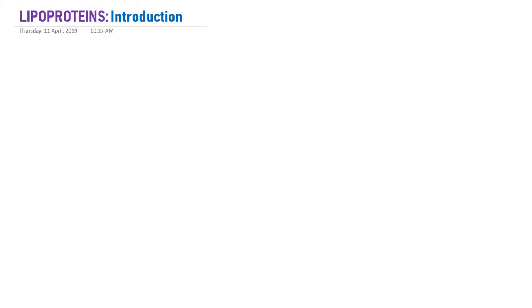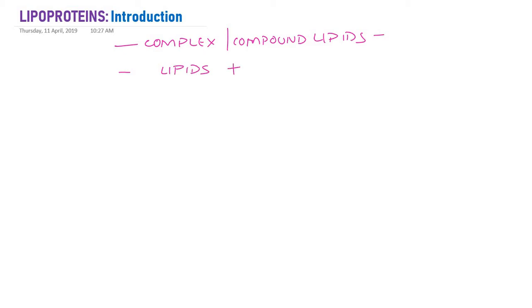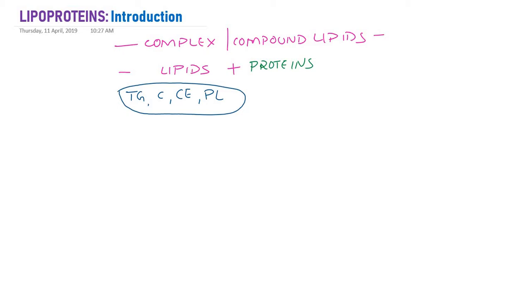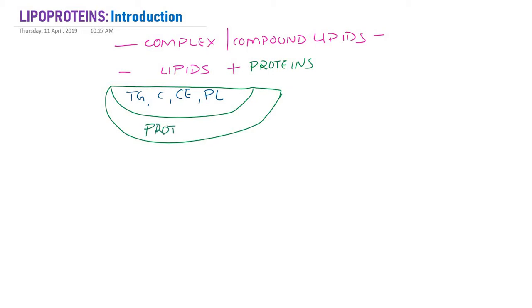We are going to learn lipoproteins. This is again complex lipids or compound lipids. Lipoproteins are made up of lipids plus protein. Lipids could be triglycerides, cholesterol, cholesterol ester, or phospholipids. Unlike carbohydrates and proteins, all these lipids are not water soluble or water miscible. So there is a difficulty in transporting these lipids from one organ to another, and that is why these lipids must be complexed with proteins, which act as a vehicle or carrier.